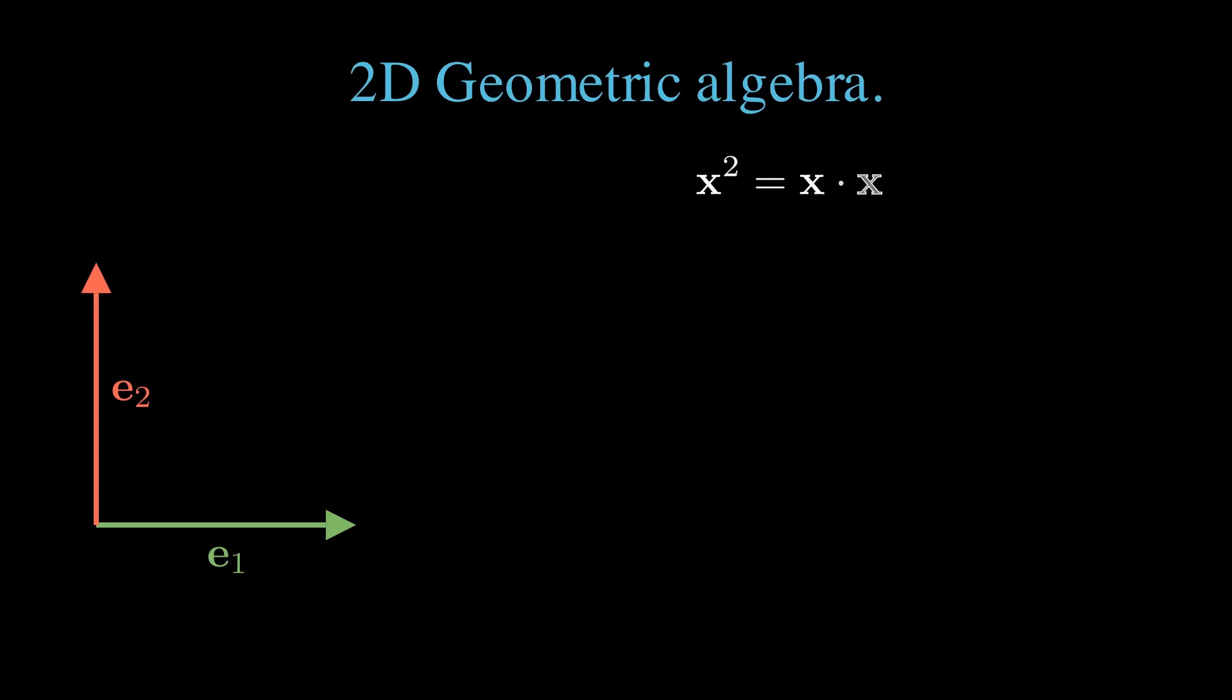The contraction axiom implies that e1 squared equals 1, and that e2 squared equals 1.